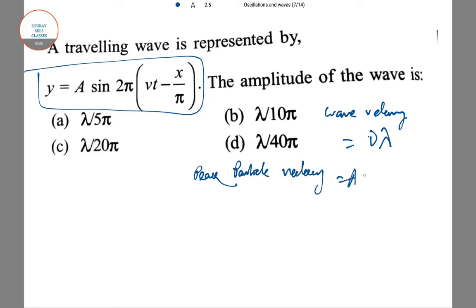Peak particle velocity is aω = a × 2πν. Now we can proceed with this sum.